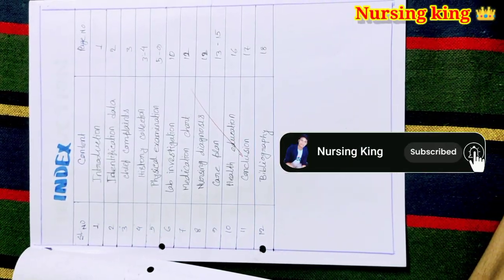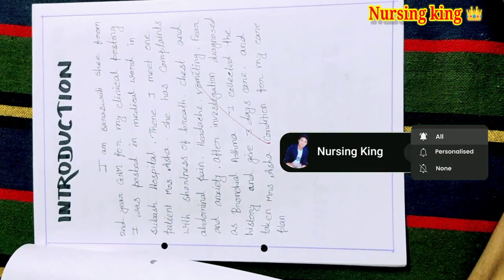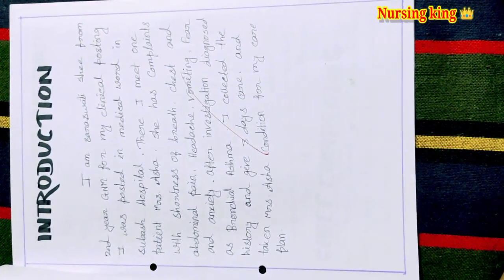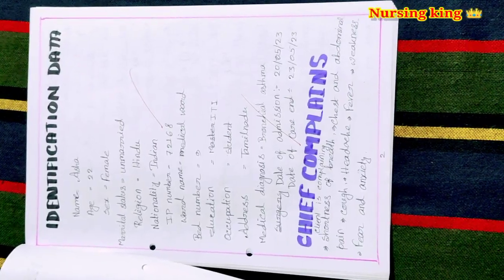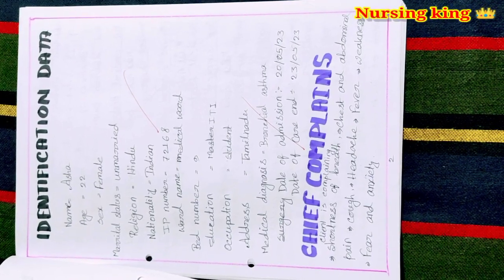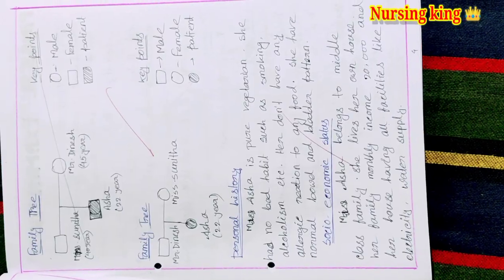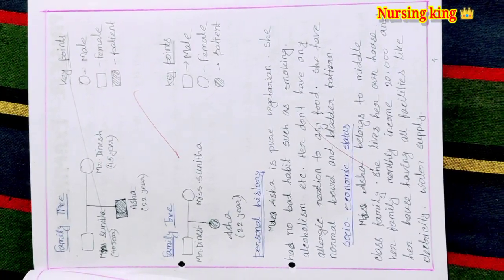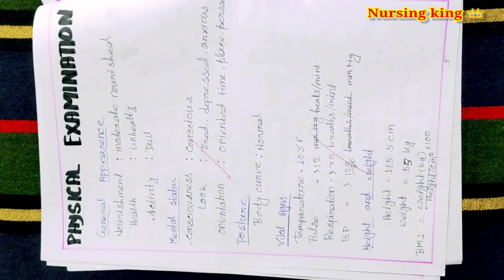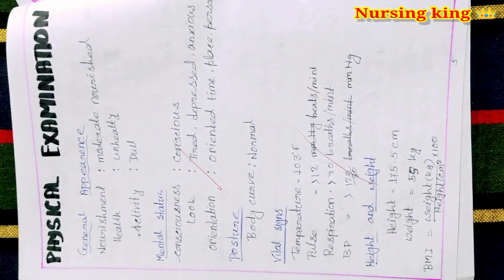Hello guys, welcome back to my YouTube channel. Today we are coming on a new video: bronchial asthma. First, you have to write the introduction. After introduction, identification data and chief component. What are the components there? Then past and present medical and surgical history.